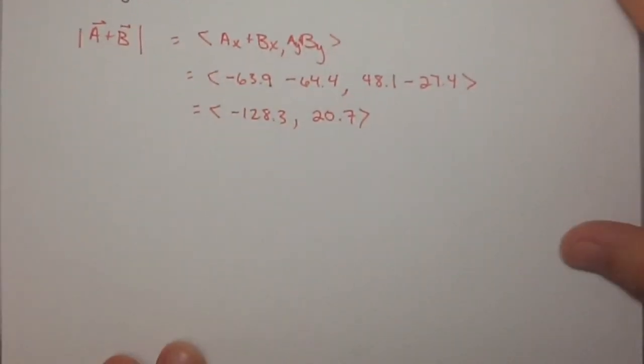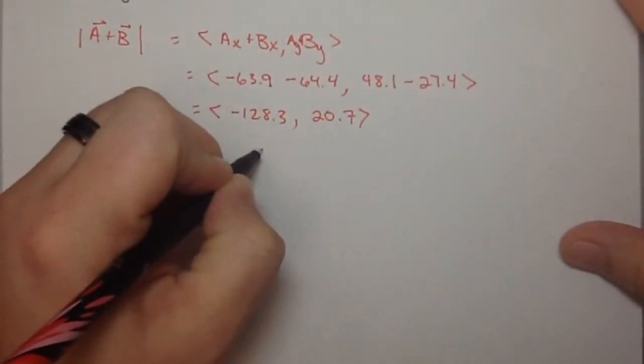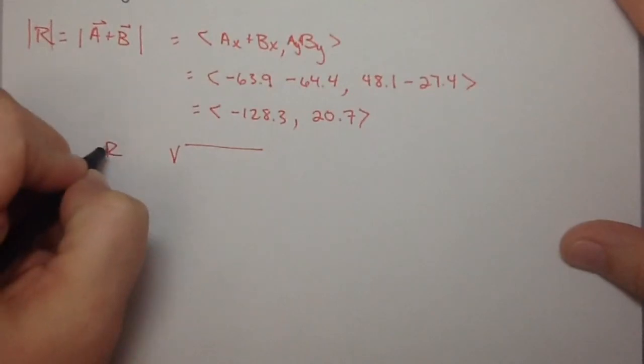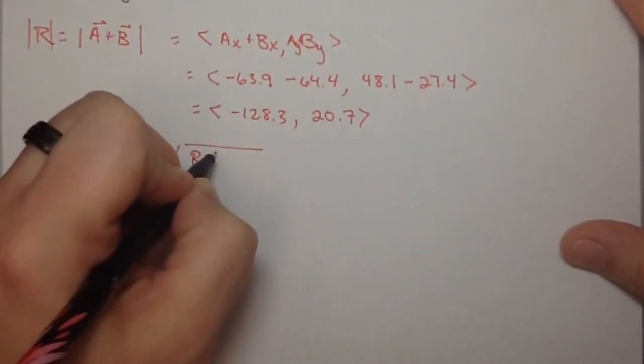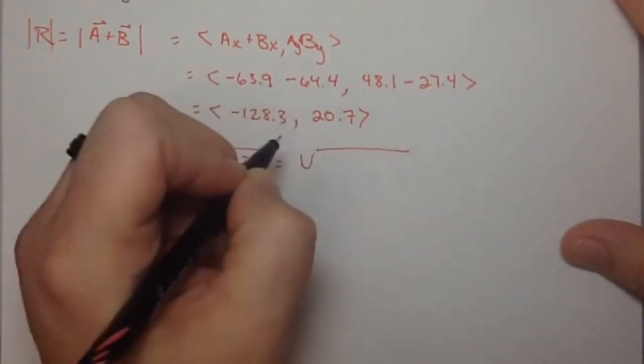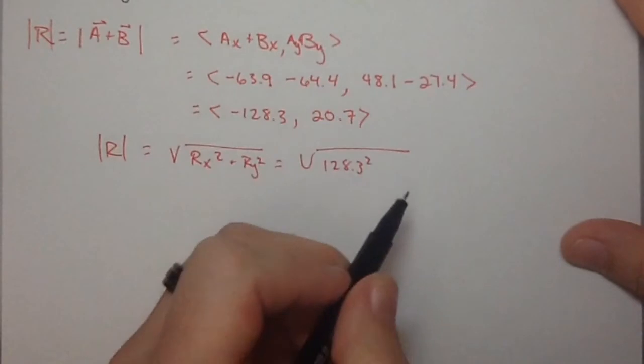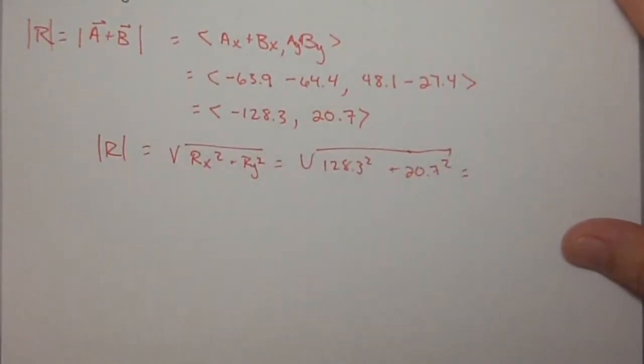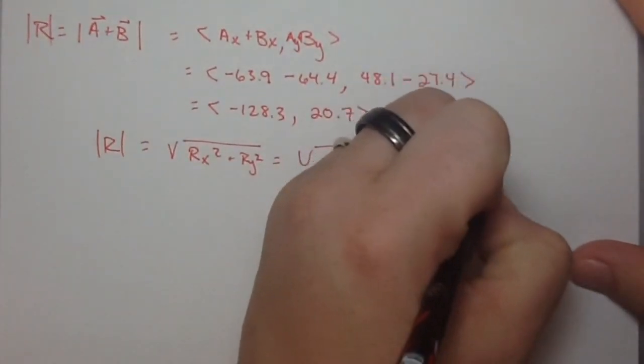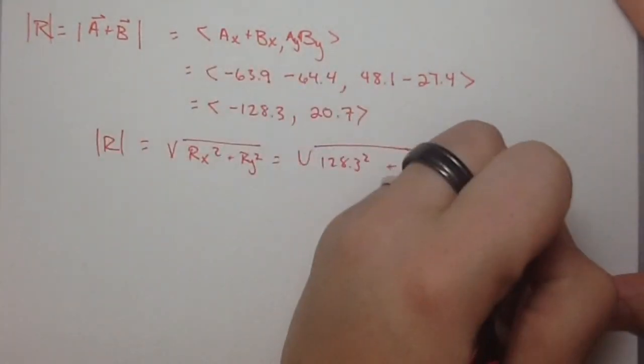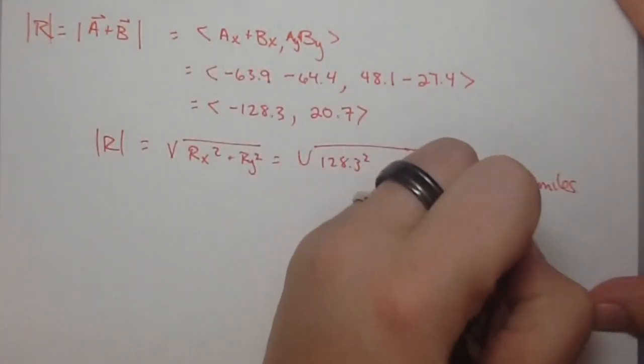To find the magnitude, we're just going to take this resultant. To find the magnitude of the resultant, it's the square root of R_x squared plus R_y squared. So that's the square root of 128.3 squared plus 20.7 squared. So this is 129.96 miles. It's about 130 miles.